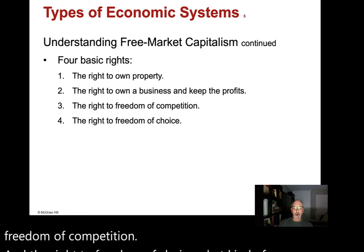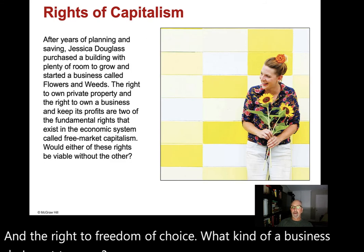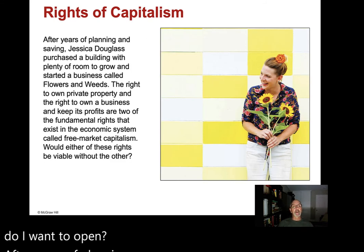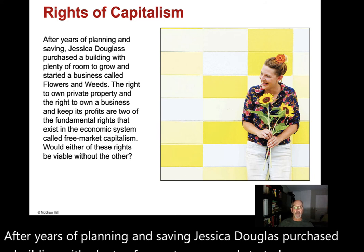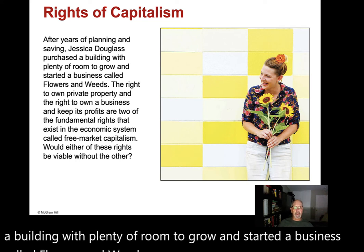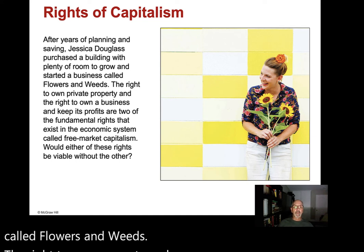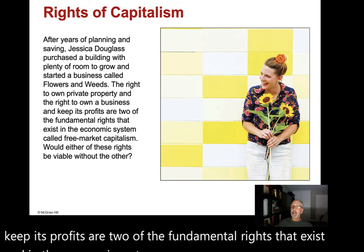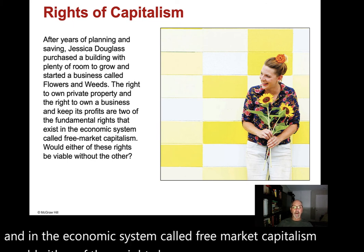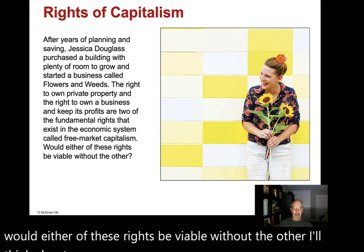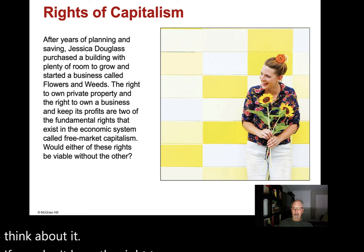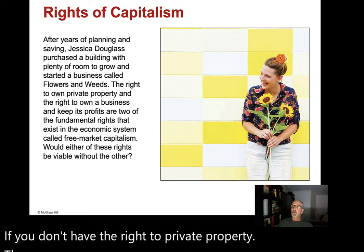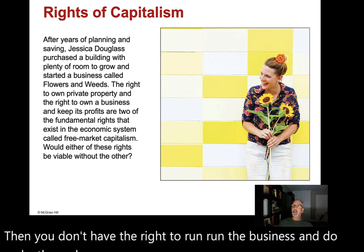After years of planning and saving, Jessica Douglas purchased a building and started a business called Flowers and Weeds. The right to own property and the right to own a business and keep its profits are two fundamental rights in free market capitalism. If you don't have the right to private property, you don't have the right to run the business, make decisions, and keep the profits.